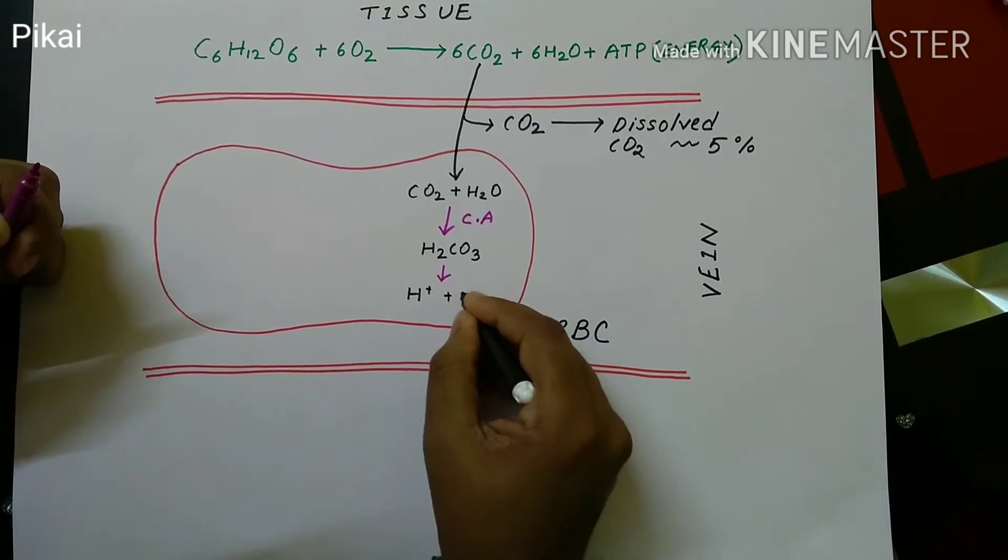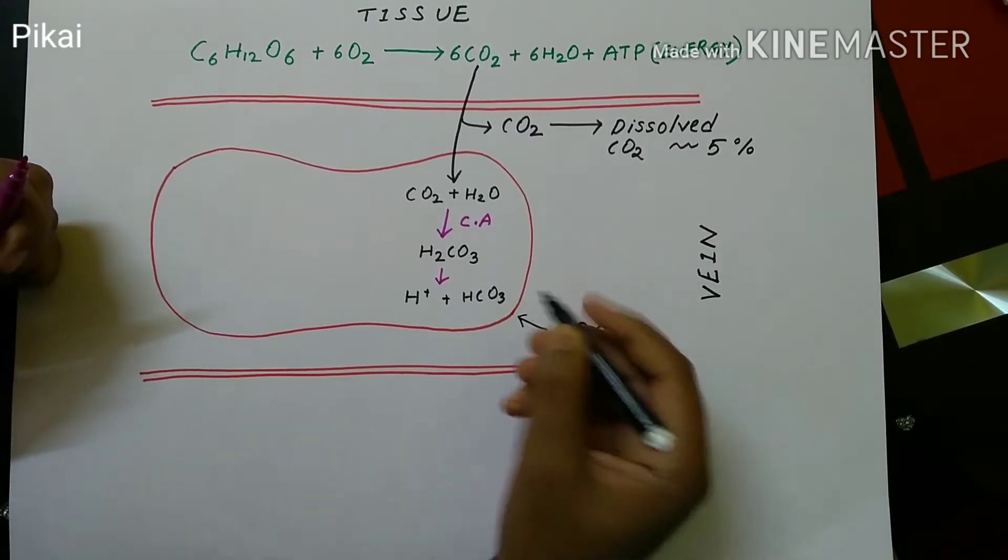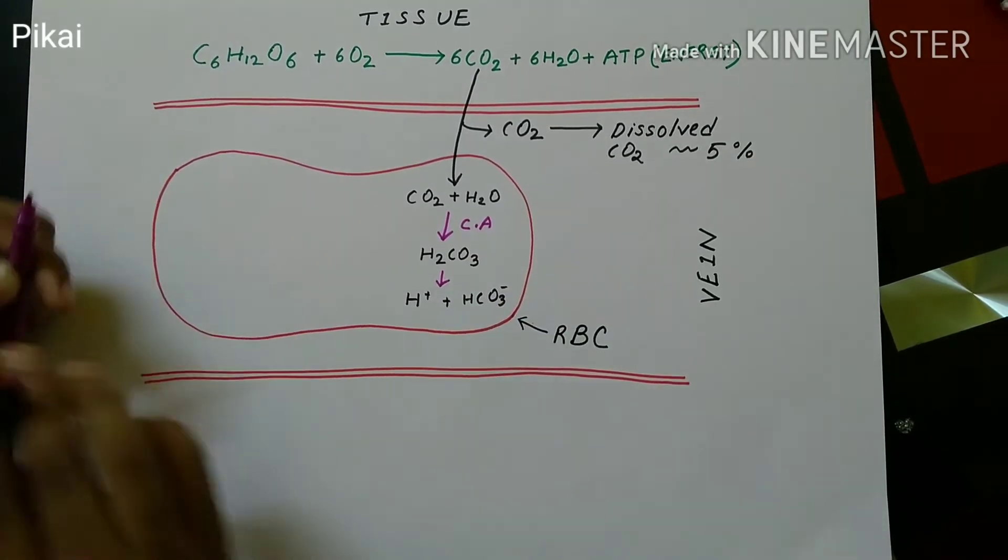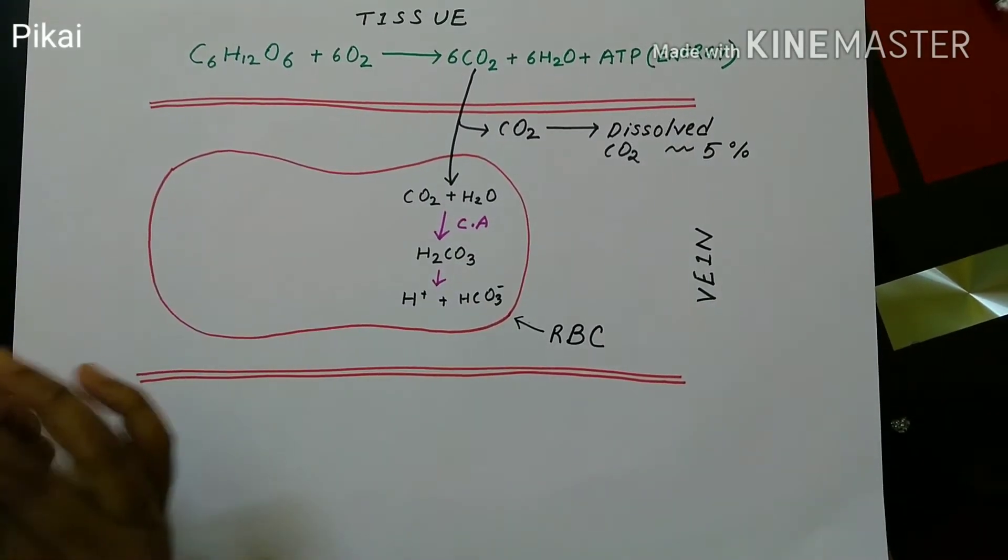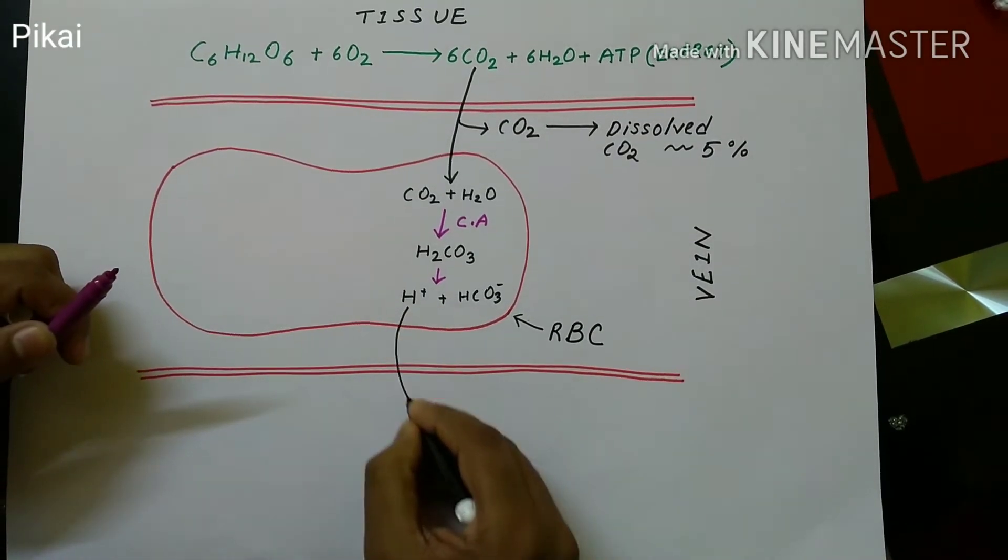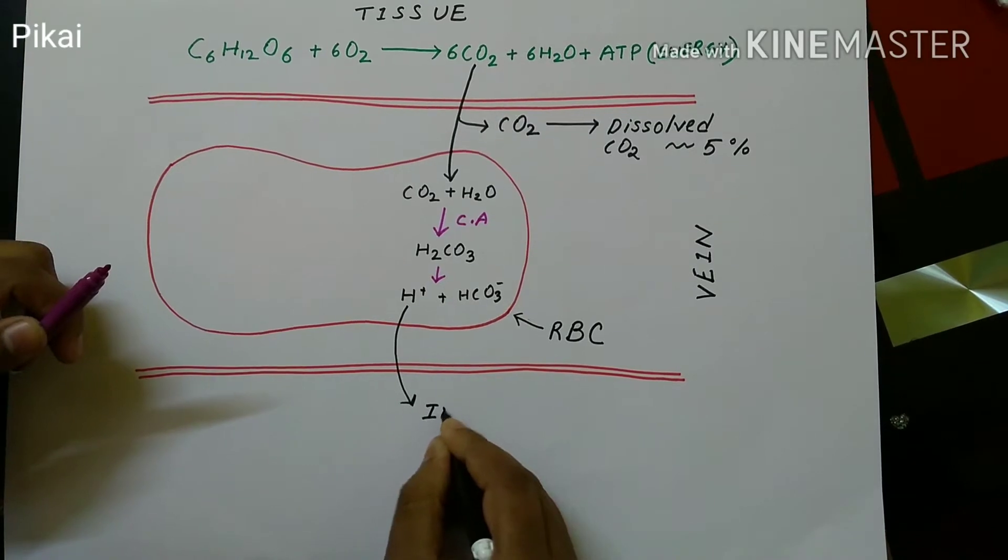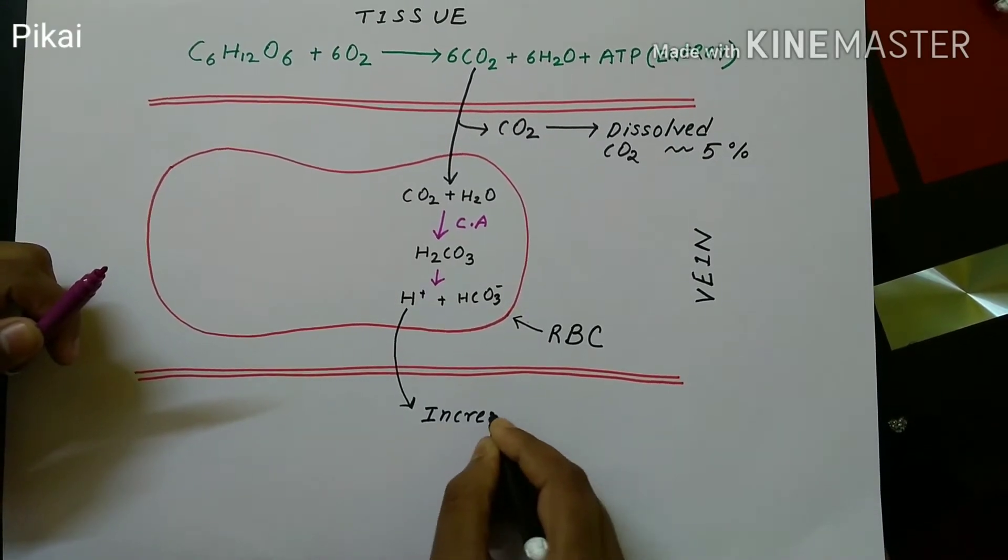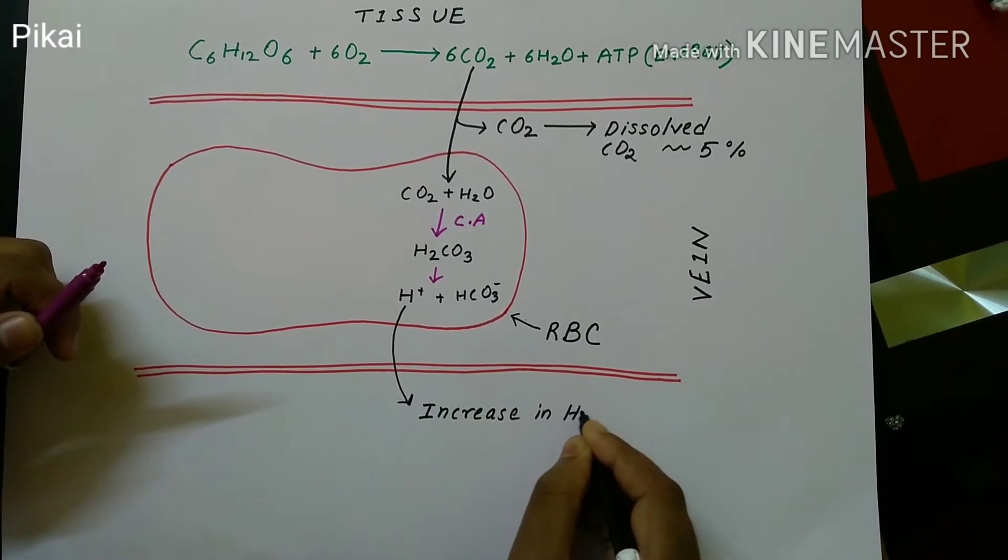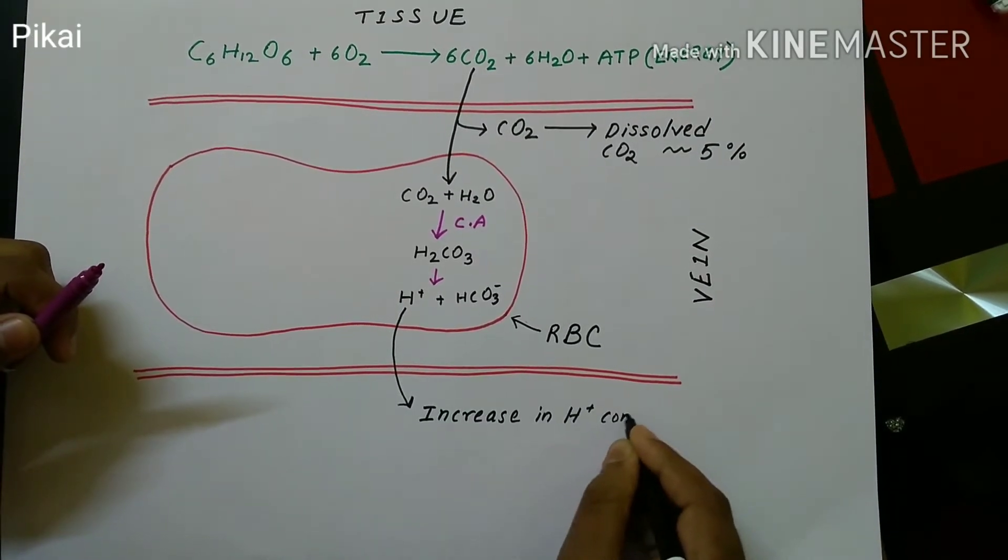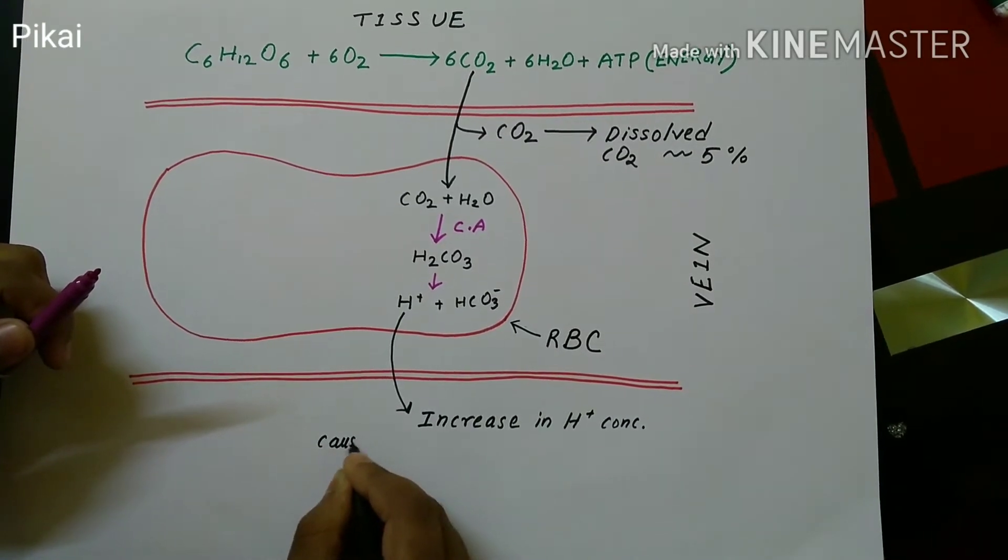So carbonic acid being unstable, it dissociates into H+ and HCO3- ion, that is bicarbonate ion. This H+ and HCO3- are formed by the dissociation of H2CO3, that is carbonic acid. So H+ gets increased in concentration by the constant breakdown of H2CO3. This increasing amount of H+ concentration leads to